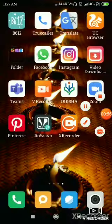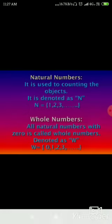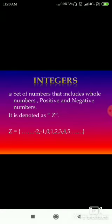From these numbers, I am going to give details about rational numbers. But first, let me explain natural numbers. Natural numbers are used to count objects. They are denoted as N and start from 1, 2, 3, etc. Whole numbers are all natural numbers with 0, denoted as W: 0, 1, 2, 3, etc. An integer is a set of numbers that includes whole numbers and positive and negative numbers, denoted as Z — all negative and positive numbers together with zero.